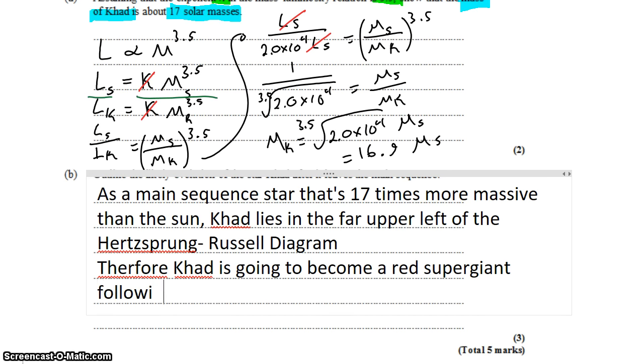Following that, it's going to follow the normal progression for red supergiants. It will go supernova and then become a neutron star.